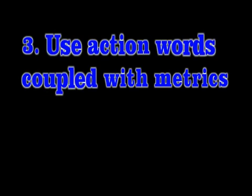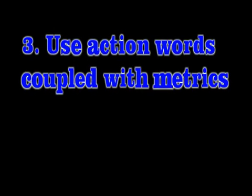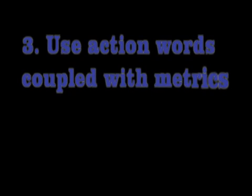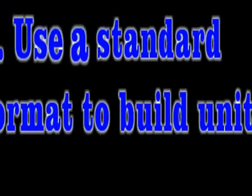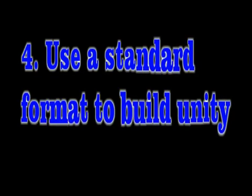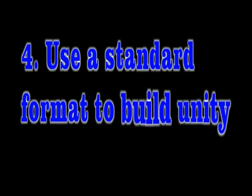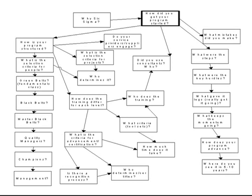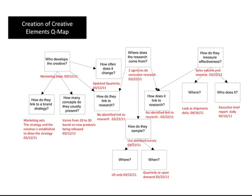Guideline three: create detail using action words directed at resultants — that's little y's and big Y metrics — and also at critical-to-quality characteristics. At this stage, it's most helpful to use words that promote active learning driven by measurement. Guideline four: use a standardized format for the team. Although there's no right or wrong way to capture questions, Lean Six Sigma exhibitors typically capture their questions in a box with black text and connect related questions with an arrow or set of arrows that shows the flow direction.